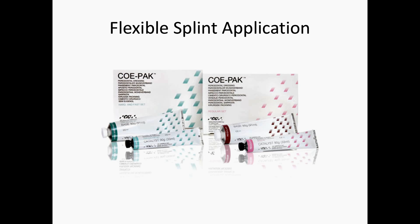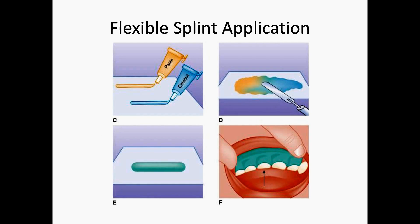In terms of applying a flexible splint in the emergency department there are a couple of options. Once the tooth is replanted, the flexible splint can be a product such as Copac, a commonly available periodontal paste. You mix the catalyst with the base until it becomes a putty, then apply it over the avulsed tooth as well as the lateral and medial teeth, forming almost a bridge. You can also place it across the gingiva for more stability.